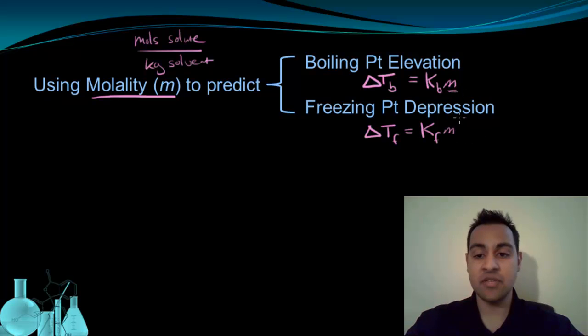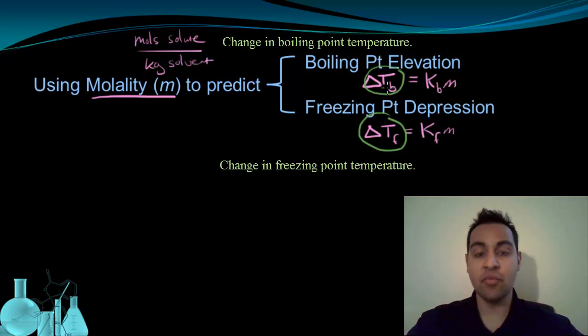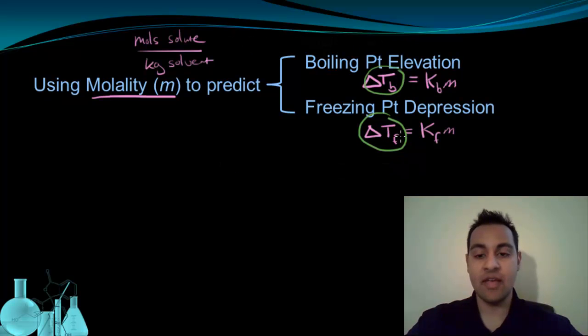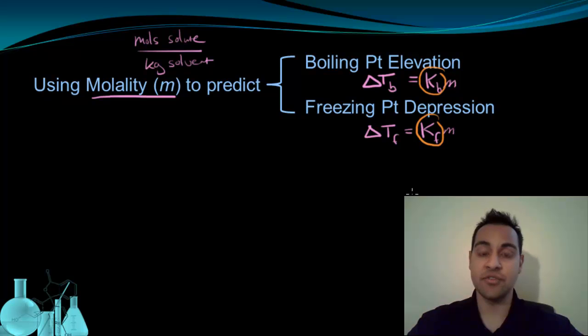So we've already said that these two variables here, the m's, those are both molality. These terms at the start, ΔTb and ΔTf, refer to the change in the boiling point temperature for Tb, B for boiling, or the change in the freezing point temperature, F for freezing. So the last thing we need to know is what this Kb and Kf terms refer to.